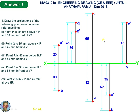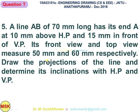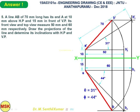Problem number five: a line AB 70 mm long, one end A is 10 mm above HP and 15 mm in front of VP. The front view measures 50 mm and the top view measures 60 mm. Draw the projections and find the true inclinations theta and phi.